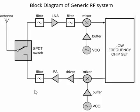If we look at the block diagram of a generic RF system — RF meaning radio frequency — it looks this way. For any RF signal to be transmitted or received from or in the air, we need an antenna. And in the RF system, we need a receive section and we need a transmit section.